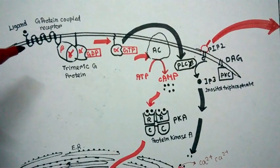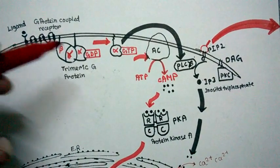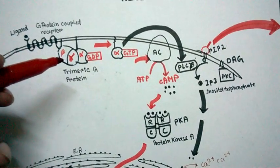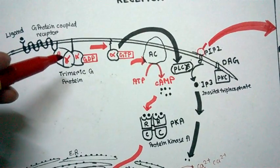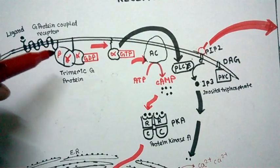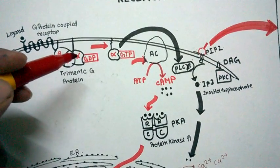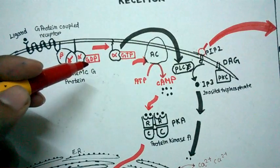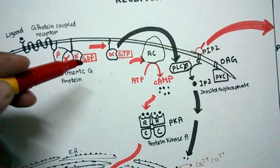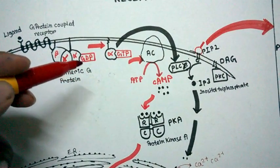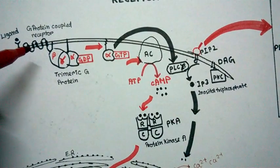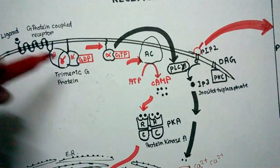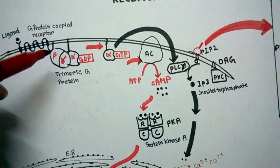This receptor is also known as serpentine receptor and is associated with a trimeric G protein. This trimeric G protein has three subunits: alpha, beta, and gamma. The alpha subunit usually binds to GDP when it is in an inactive state. Upon ligand binding to the G protein-coupled receptor, the trimeric G protein undergoes a conformational change.